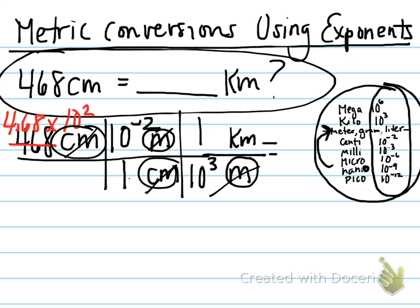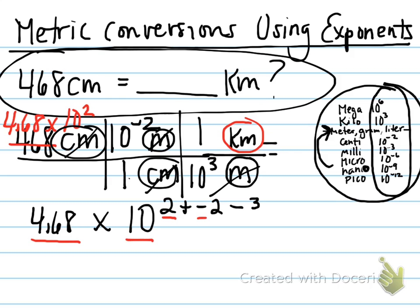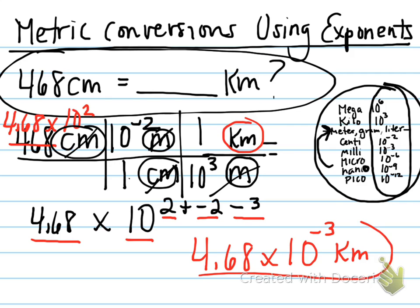Now, we're going to move all of this down to finish our multiplication. This gives us an answer of 4.68 times 10 to the 2 plus negative 2 minus 3. 4.68 times 10 to the negative 3rd kilometers. Let's practice another one.